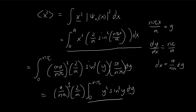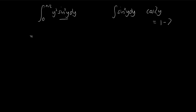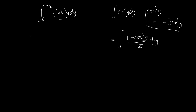What remains inside is the integral of y² sin²(y) dy, from 0 to nπ. To solve this integral we'll need to use integration by parts, which means we first need to integrate sin²(y). To do that, we use the double angle formula: sin²(y) = (1 − cos2y)/2. Integrating gives y/2 − sin(2y)/4 + C.